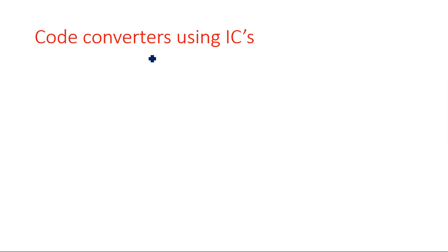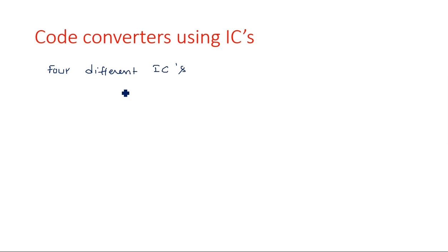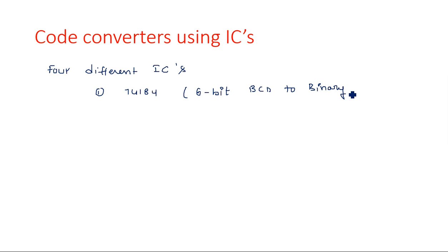If you observe any electronic boards, you can see a lot of integrated circuits along with some resistors and capacitors. You don't have individual logic circuits alone on the board. Even regulators also come with integrated circuits. Now for code converters using ICs, we are going to see four different ICs. The first one is 74184, which is a six-bit BCD to binary converter.